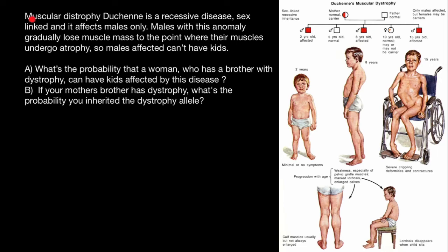Here's a problem. Duchenne muscular dystrophy is a recessive, sex-linked disease, and it affects males only. Males with this anomaly gradually lose muscle mass to the point where their muscles undergo atrophy, so affected males cannot have kids.